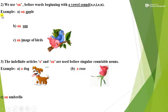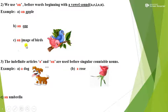Point number 2: we use An before words beginning with a vowel sound like A, E, I, O, U. Examples: An apple, An egg, An image of birds. Children, you can see the beginning of these words starts with a vowel sound — that is why we have used the indefinite article An before them.